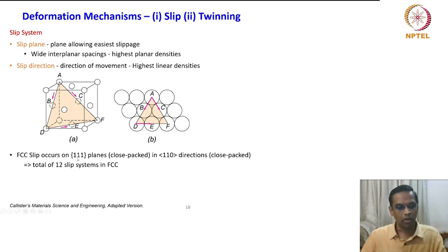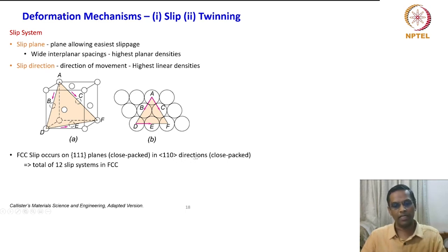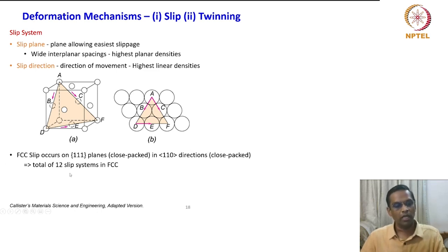There are also close-packed directions in the ⟨110⟩ family, also called close-packed directions. There are about 12 slip systems in face-centered cubic lattice.